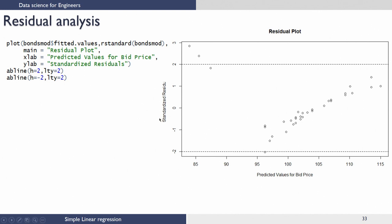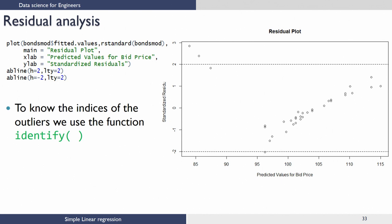On the y-axis I have standardized residuals and on the x-axis I have predicted values for bit price. From the plot we can see that there are 2 outliers which are fairly far out. There is one close to the upper confidence limit and one almost on the lower confidence limit. From the plot we may not be able to tell which points these are — by points I mean the row IDs. We are going to use another function called identify that will help us identify the indices of these samples.